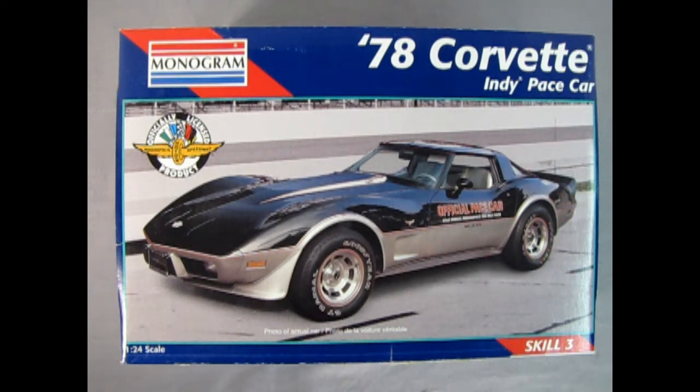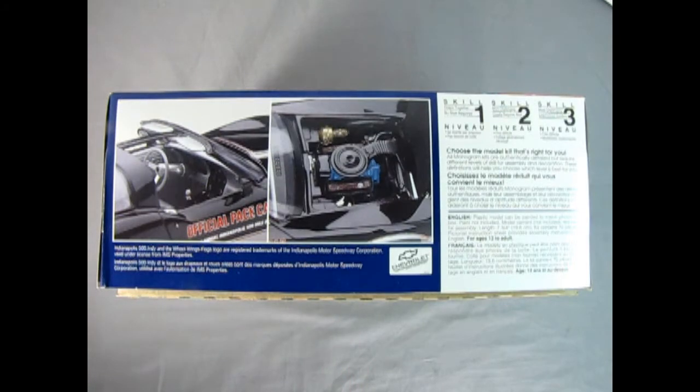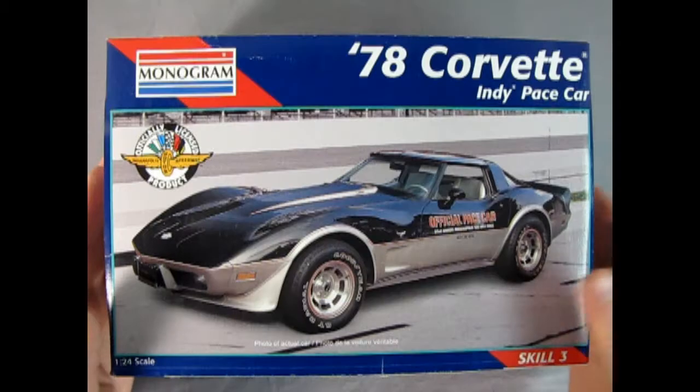On this side of the box we see our model kit features which include removable clear roof panels, detailed 350 cubic inch engine, and authentic Indy 500 Pace Car decals. There's the side of our car from the front three-quarter and the rear three-quarters. On this side of the box we get a wonderful view of the interior as well as a 350 Chevy Corvette motor.